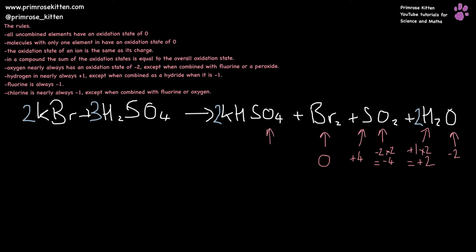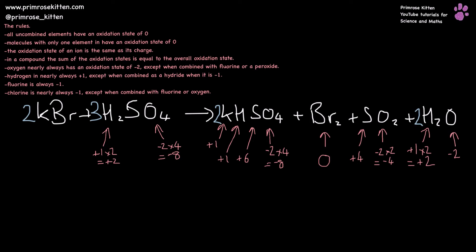This oxygen is also going to have an oxidation state of minus two, and there are four of them in this compound, which means overall it is contributing minus eight. Potassium — if you're not sure or can't remember, the charge on the most common ion is a good place to start — so potassium has a plus one oxidation state. Hydrogen plus one oxidation state. This compound has an overall charge of zero, so we have two positives and eight negatives. We need more positives to make that up, meaning sulfur is going to be plus six in the sulfate ion. Oxygen is minus two, and we have four of them, giving us minus eight in total. Hydrogen is plus one and there are two of them, giving us plus two in total, leaving sulfur to contribute plus six.